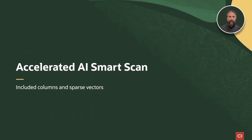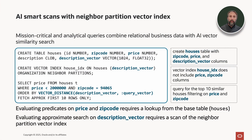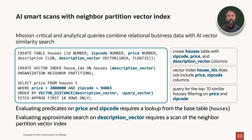Let's talk about accelerated AI smart scan with neighbor partition vector index. Mission-critical and analytic queries combine relational business data with AI vector similarity search. If we were to create a table, 'houses,' with zip code, price, and description vector columns, we can then query this table for the top 10 similar houses using a vector index, house_IDX, that includes the description vector column itself. If we wanted to refine that query further based on price and zip code, evaluating these predicates would require a further lookup on the base table. Evaluating the approximate search on description vector requires a scan of the neighbor partition vector index, which is done using AI smart scan introduced in Exadata System Software 24.AI.